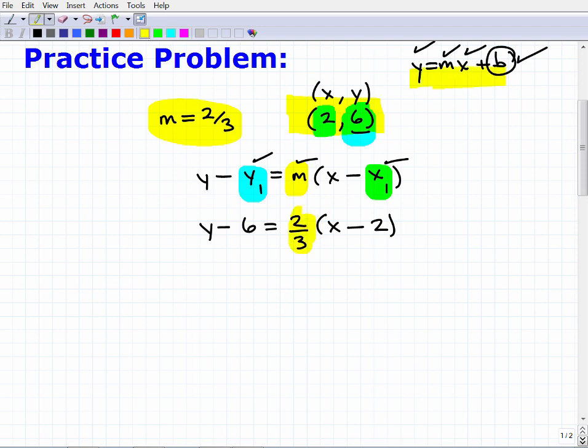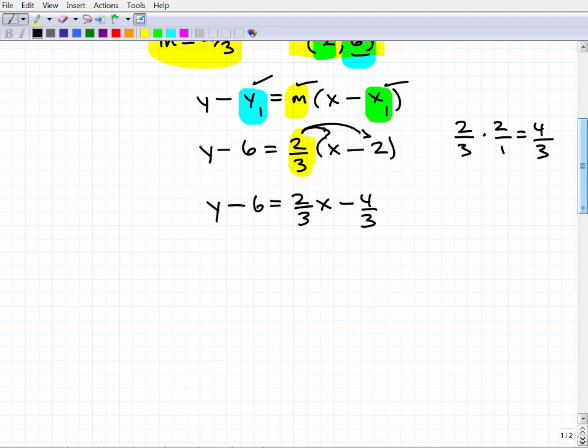At this point, what you want to do is the distributive property. I want to get my line in Y equals MX plus B form. So that's going to be two thirds times X. Y minus six is equal to two thirds times X and then two thirds times this negative two. Two thirds times two over one is going to be four thirds, but that's negative four thirds right there. Almost done.